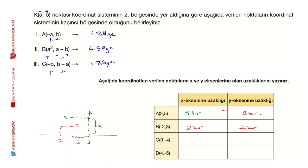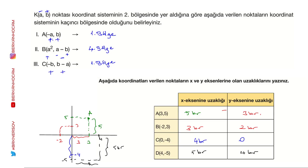(0,-4) noktası için: y eksenine olan uzaklık 0, x eksenine uzaklık 4 birim. (4,-5) noktası için: x eksenine uzaklık 5 birim, y eksenine uzaklık 4 birim. Lütfen dikkat edin: bazı arkadaşlar x ve y'nin yerini karıştırıyor. Mutlak değer olarak alıyoruz yani.